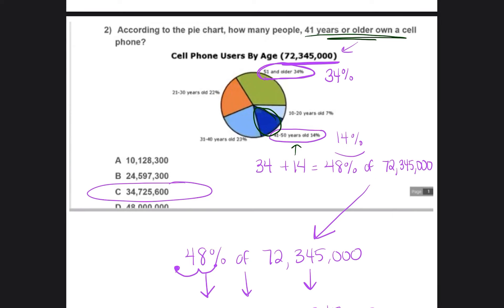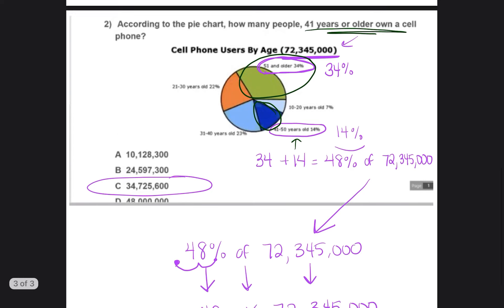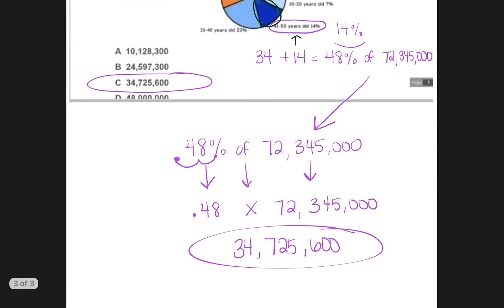Look all around the pie chart to see, does any of the other pieces of the pie chart fit in what they're asking me for? And that's when we were able to see, this one too fits in as well. And so we were able to combine both percentages. And then we were able to find our answer of 34,725,600.